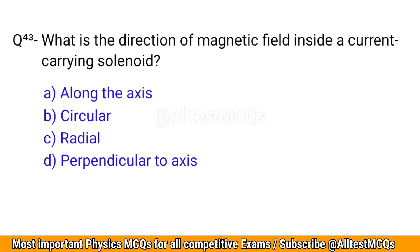Q43. What is the direction of magnetic field inside a current-carrying solenoid? The correct option is A: Along the axis.